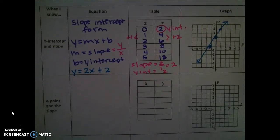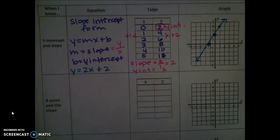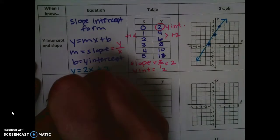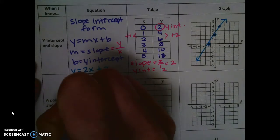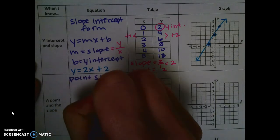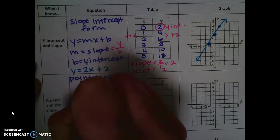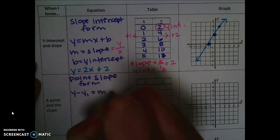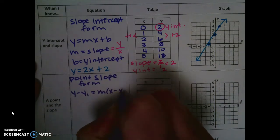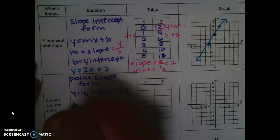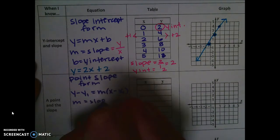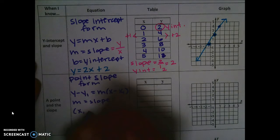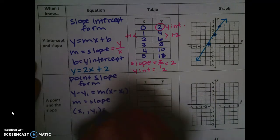Next example, if you are given a point and the slope, you're going to use point-slope form. So that looks like y minus y1 equals m times x minus x1, where m is still the slope. And then x1 comma y1 is the point.